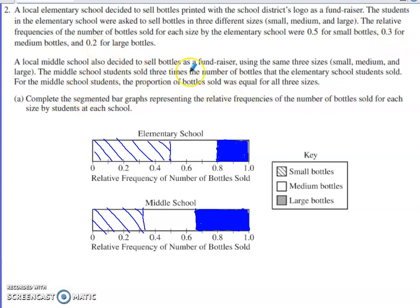The middle school is also going to sell bottles as a fundraiser using the same three sizes. The middle school students sold three times the number of total bottles that the elementary did, and the proportion of bottles sold was equal for all three sizes — a proportion of 0.33 for each bottle size for the middle school.